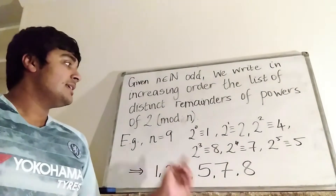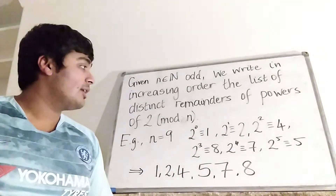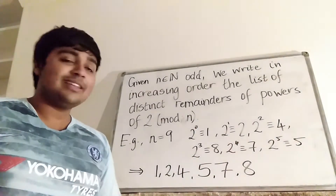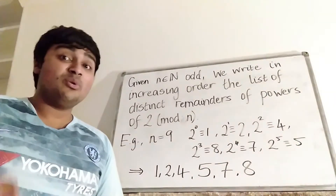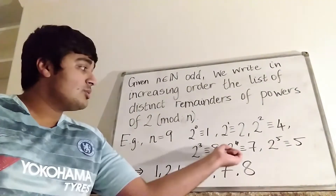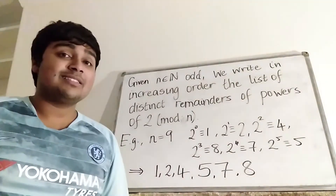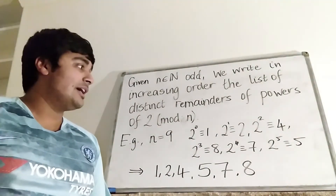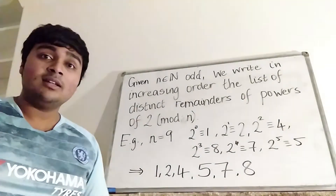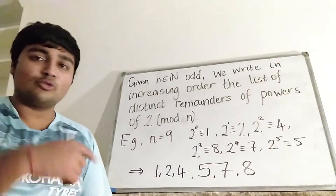For example, if n equals 9, then we have 2 to the 0, which is 1, congruent to 1 mod 9. 2 to the 1 is 2, congruent to 2 mod 9. 2 squared is 4, congruent to 4 mod 9. 2 cubed is 8, congruent to 8 mod 9. 2 to the 4 is 16, congruent to 7 mod 9. 2 to the 5 is 32, congruent to 5 mod 9. Then 2 to the 6 is 64, which is congruent to 1 mod 9, so we get back to the starting point and the cycle repeats.